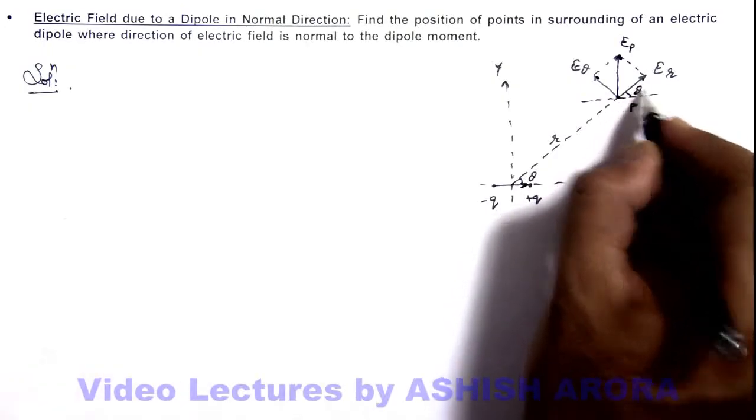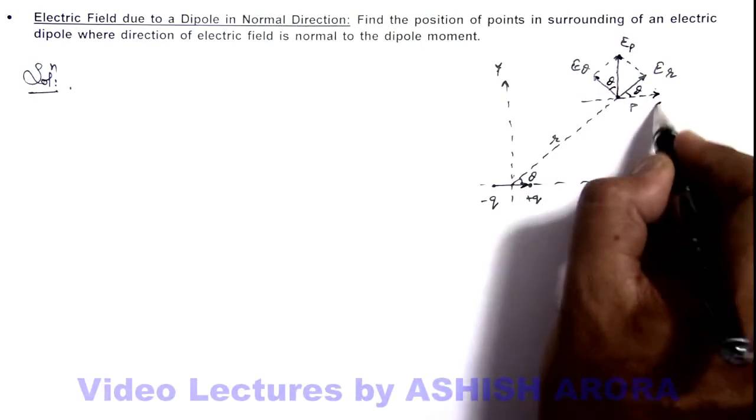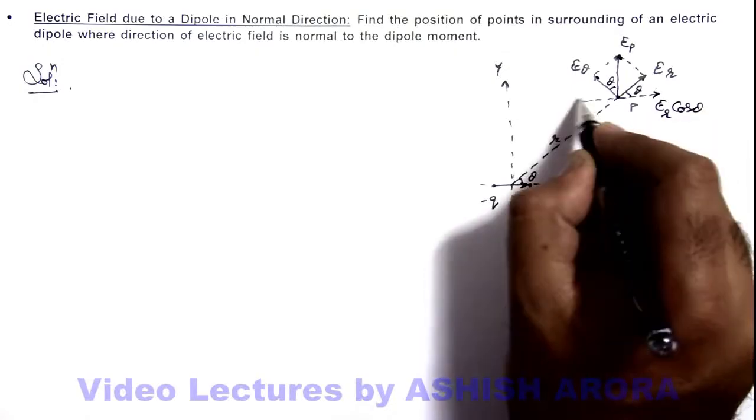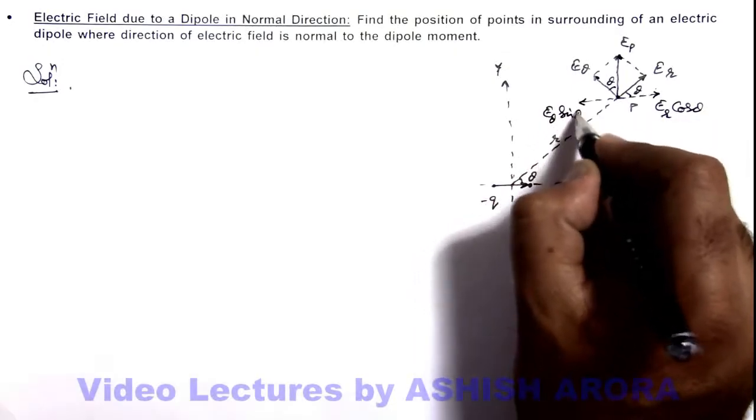If this angle is theta, here this also can be taken as theta. So this will be the component Er cos theta, and here will be the component E theta sin theta.